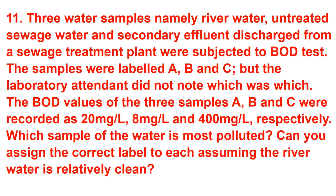The samples were labeled A, B, C but the laboratory attendant did not know which was which. The BOD values of the three samples A, B, C were recorded as 20 mg/L, 8 mg/L, and 400 mg/L respectively. Which sample is most polluted? The untreated sewage water is most polluted, secondary effluent is less polluted, and river water is least polluted.